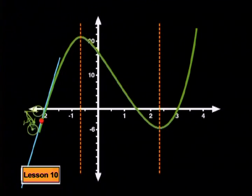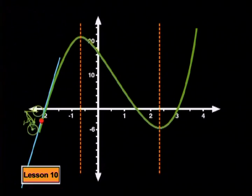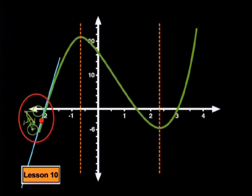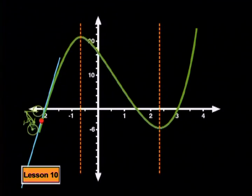What I have here is the graph of a cubic function, just like the one we drew in a previous lesson. If you notice, there is a little bicycle standing on the graph. What I would like you to do is to watch how the bicycle rides along the graph. Here goes.